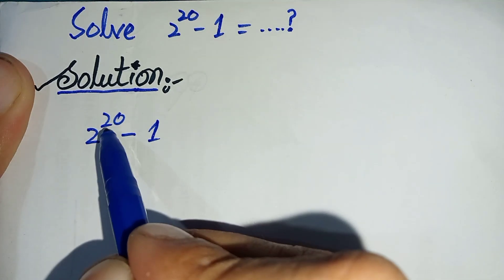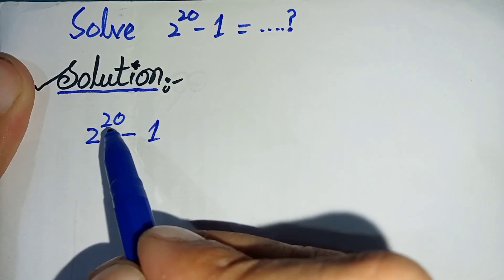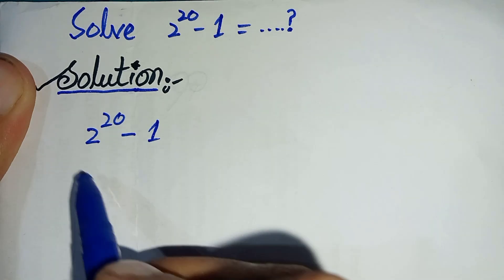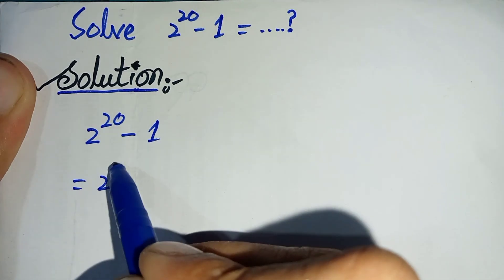In the next step, we will express the power 20 as 2 times 10, so it will become 2 raised to power 10 multiplied by 2, minus 1.